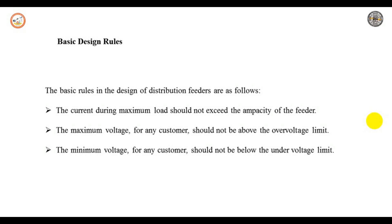The third rule is the one that sets a limit to the feeder length. When adding generation to the feeder, the minimum load may become negative, so the choice of dead band is no longer sufficient to prevent over-voltage. This may set a limit to the amount of distributed generation, which is concerned with our hosting capacity, and may also set an additional limit to the feeder length.